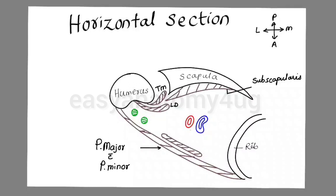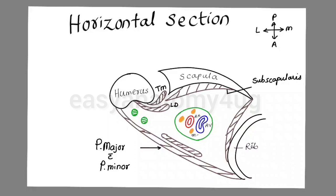Now we will draw the important contents of the axilla: axillary vein medially, axillary artery, and around the second part of the axillary artery, the cords of the brachial plexus — medially the medial cord, laterally the lateral cord, and posteriorly the posterior cord. All these structures are enclosed within the axillary sheath. On the medial aspect, the serratus anterior originates from the ribs and inserts on the medial border of the costal surface of the scapula.